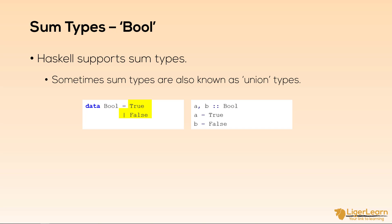After the equal sign comes two constructors, separated by a pipe symbol in the middle. We read the pipe as or, so we read this as true or false. So the whole definition can be read as, we are defining a data type called bool, which has the constructors true or false.